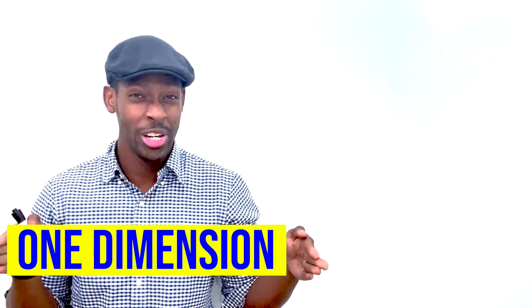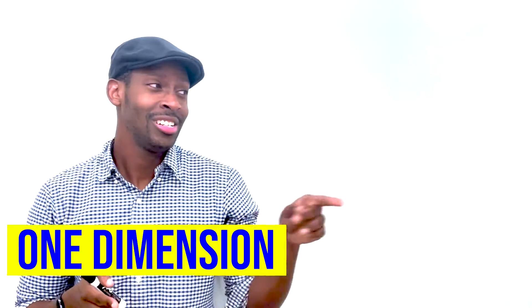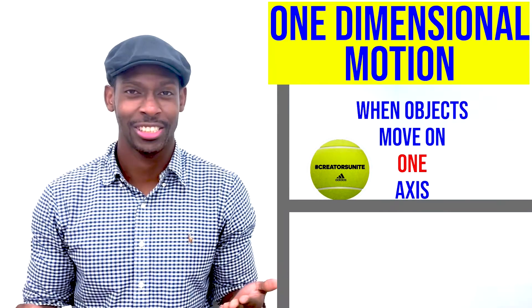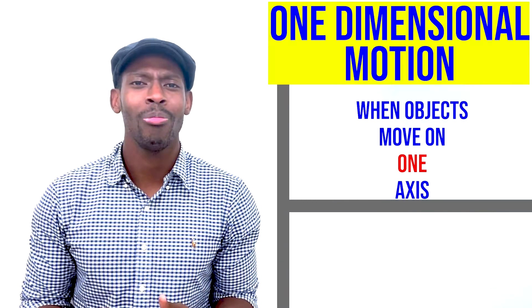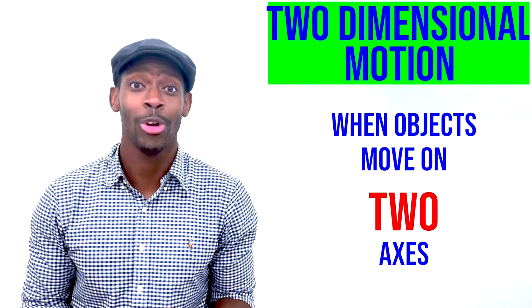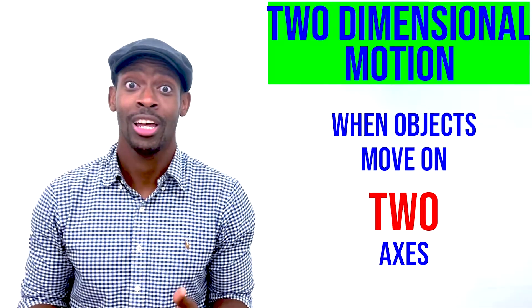Now we've spent a lot of time talking about how things move in one dimension, meaning just left to right, just up and down on one axis. But we know objects have the ability to move in two dimensions, moving on two axes at once, like this.